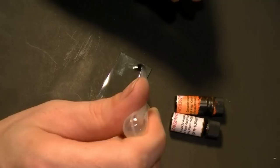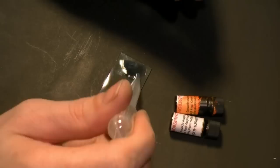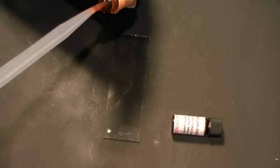First, I add the hole transport layer to the conductive side of the glass. This will bring holes to the emissive layer. And I let it dry. And next, I add a couple drops of the ruthenium emissive layer.